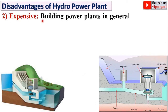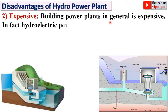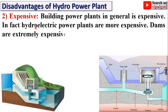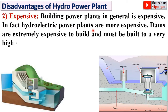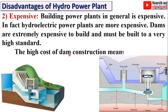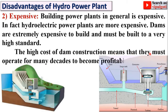Next: Expensive. Building hydro power plants is expensive — in fact, hydroelectric power plants are more expensive than other plants. Dams are extremely expensive to build and must be built to a very high standard. The high cost means they must operate for many decades before becoming profitable, which is a significant disadvantage.